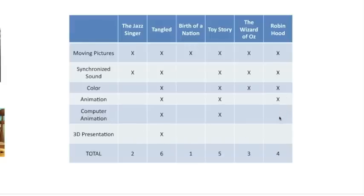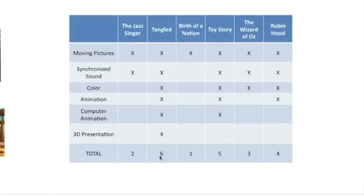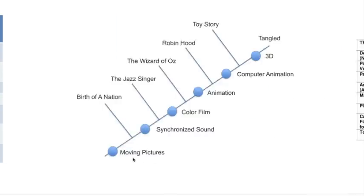Once the table is filled out, total the number of X's in each column. The number of X's tells you roughly how old the movie is — the fewest characteristics means the oldest movie. In this case, Birth of a Nation really is the oldest. The movie with the most characteristics, Tangled, is the newest. So you can put them in order from how you'd guess they evolved, which essentially orders them by age, and then draw the cladogram.